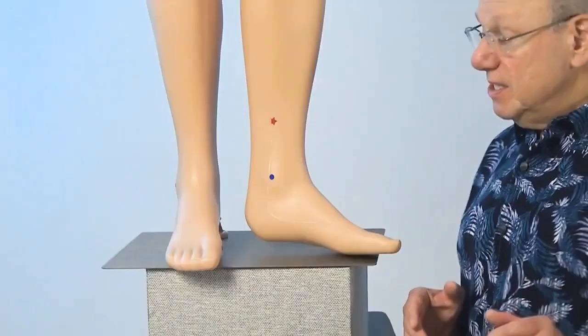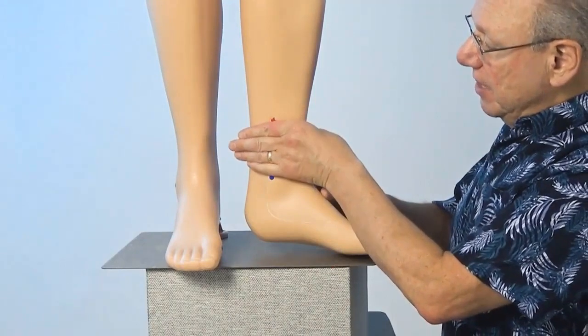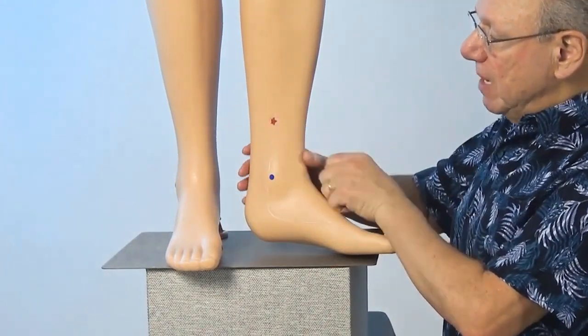To locate Spleen 6, find the tip of your ankle bone. Put your hand there and find the spot that is the width of four fingers just above it.